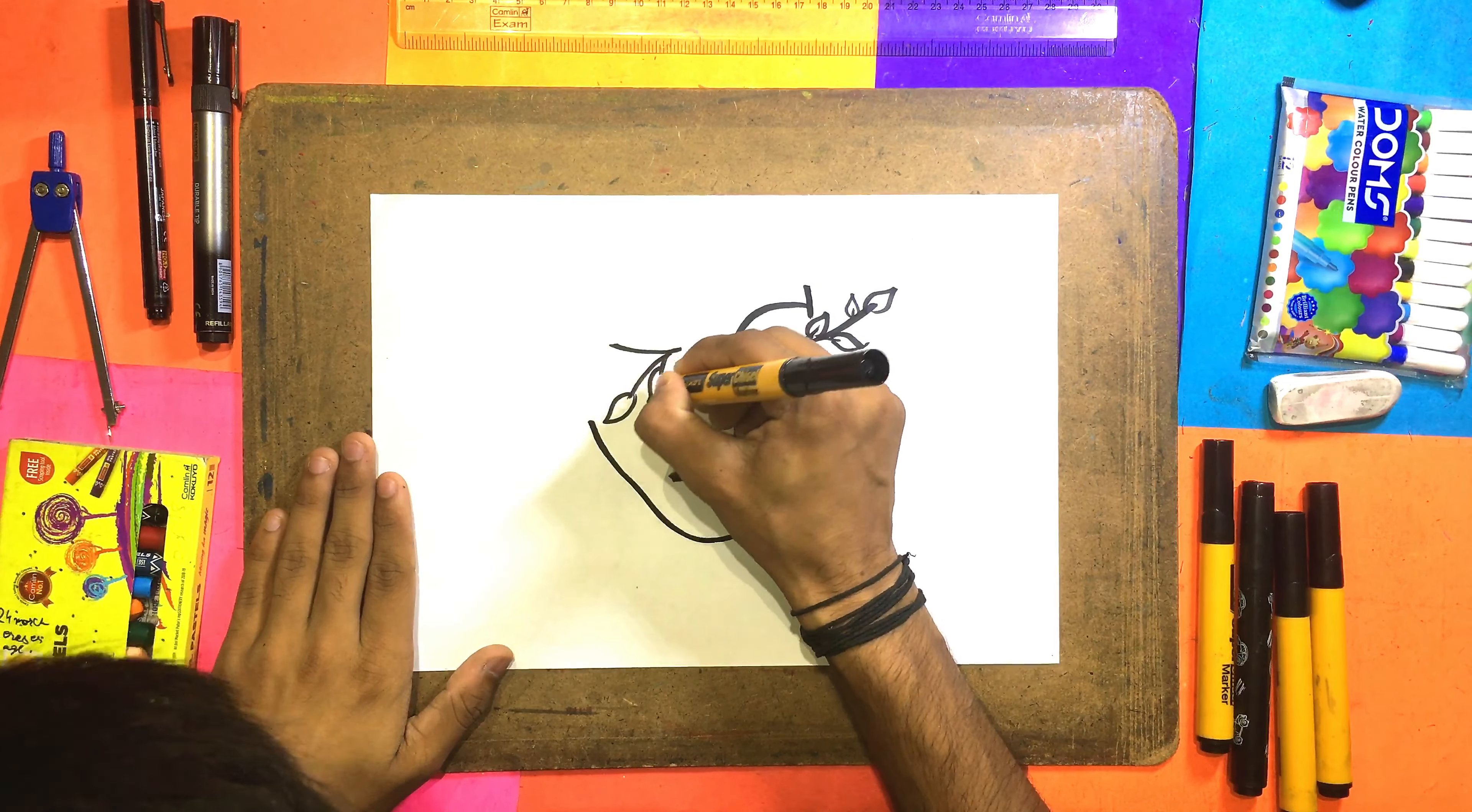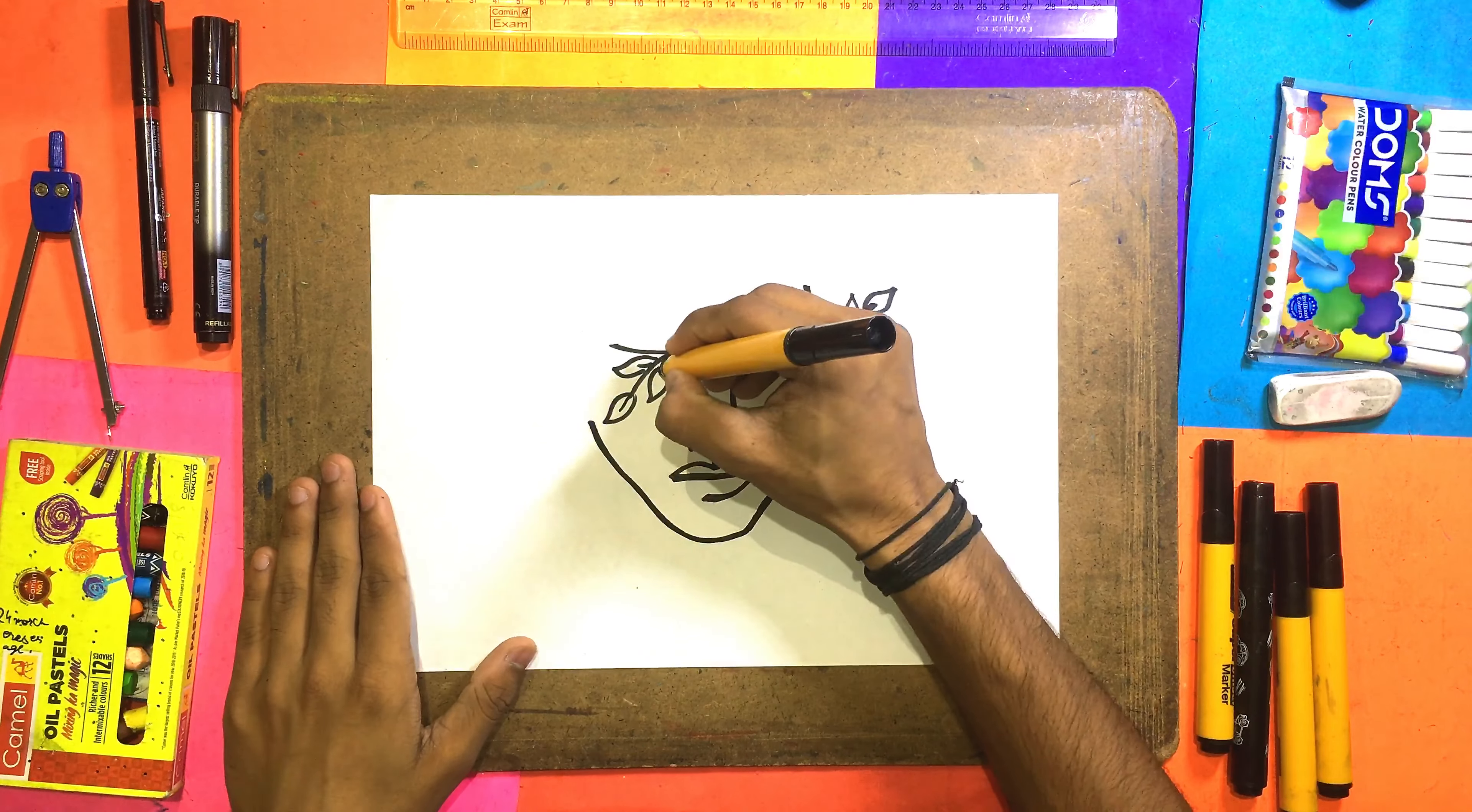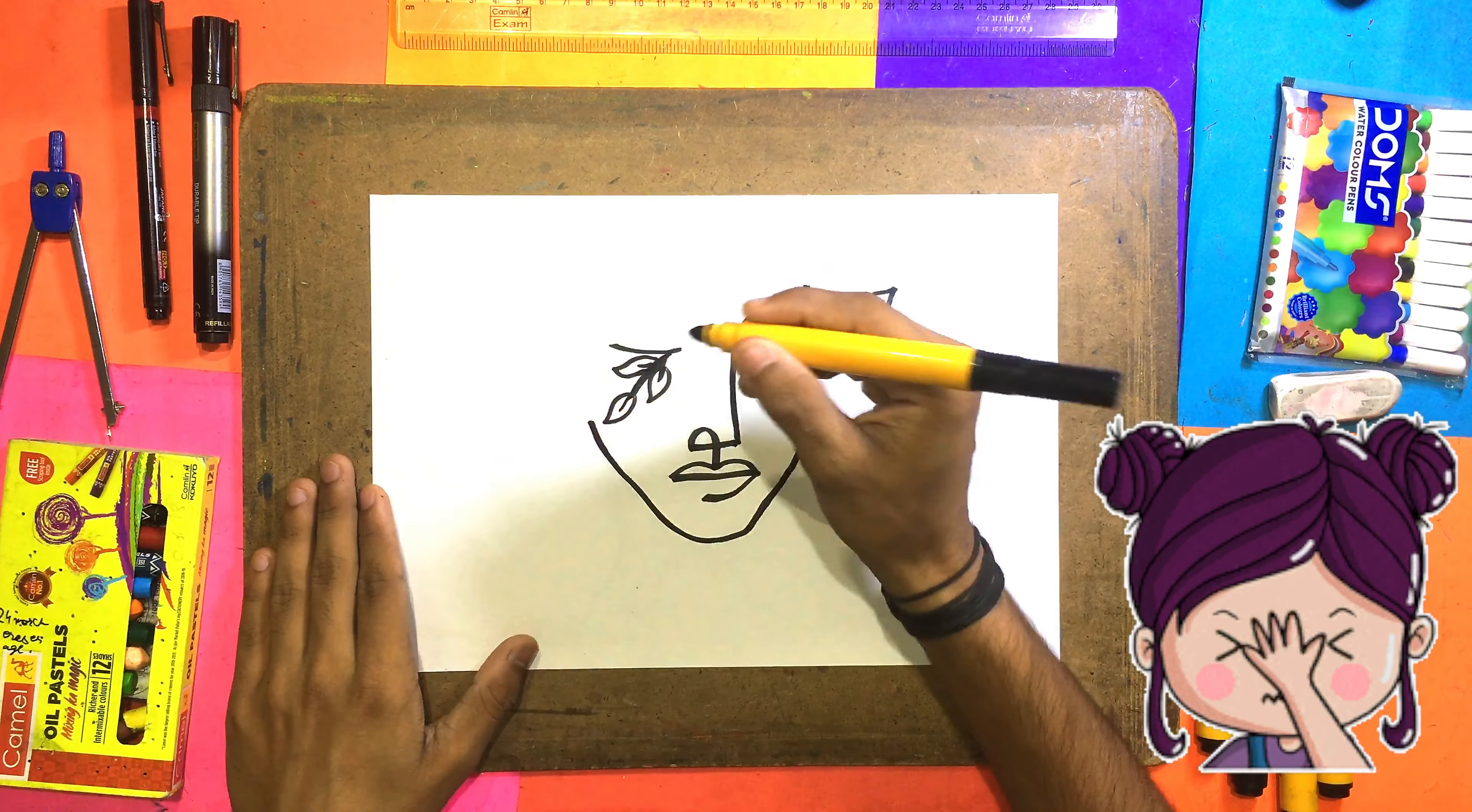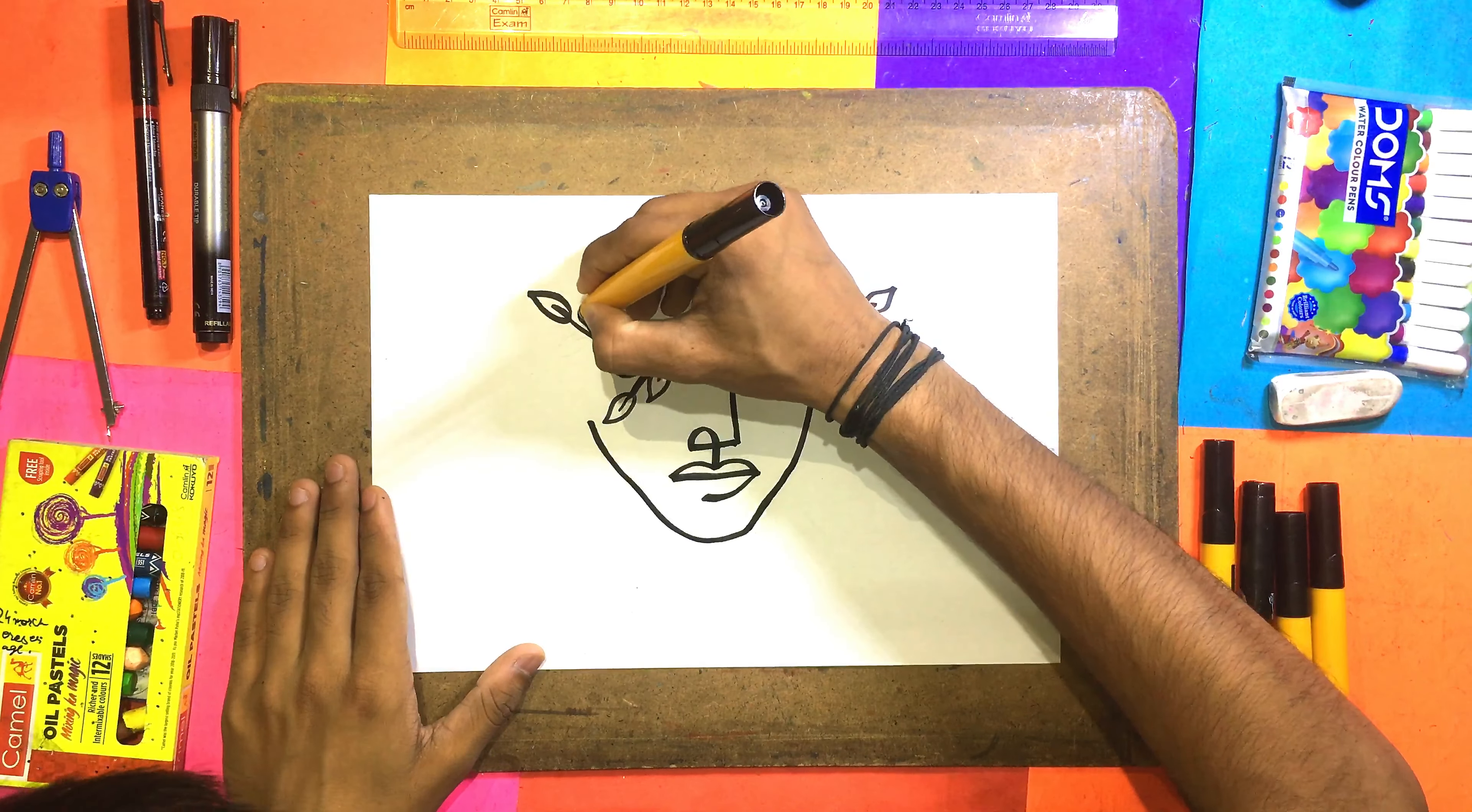We will make a leaf here. We will make leaves here. It's so much dry. I will make this kind of dry. We will make leaves here, here, and here.